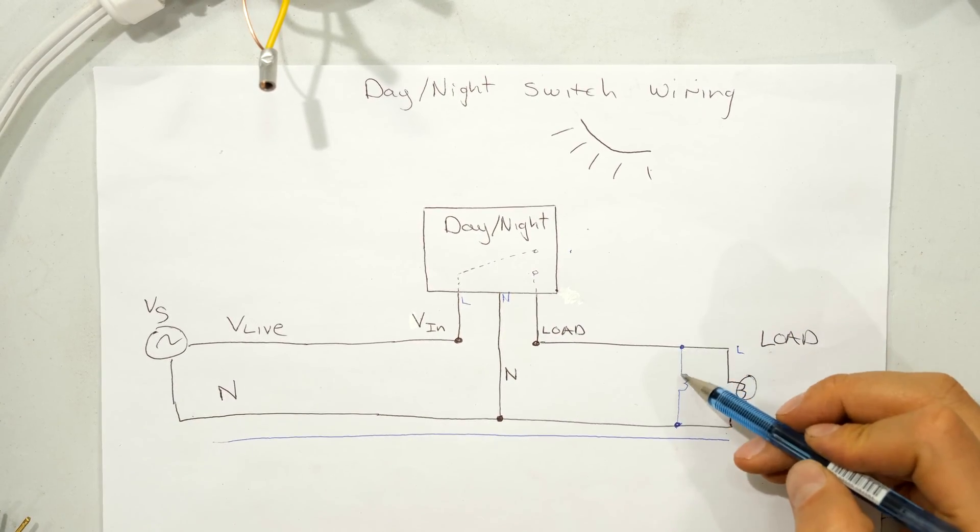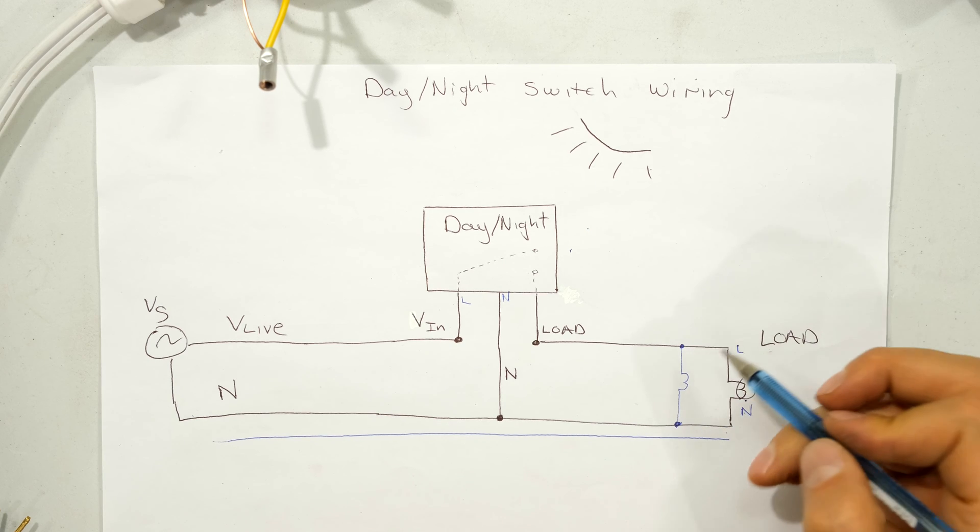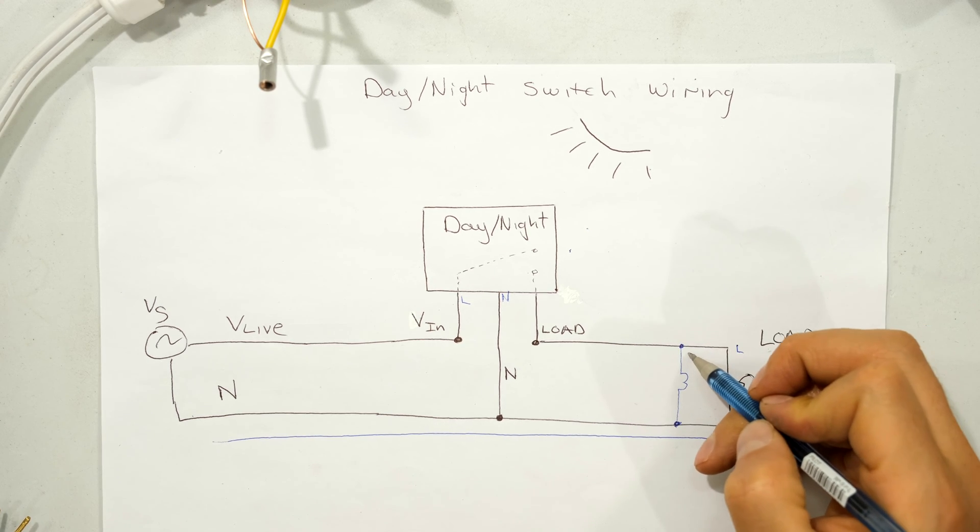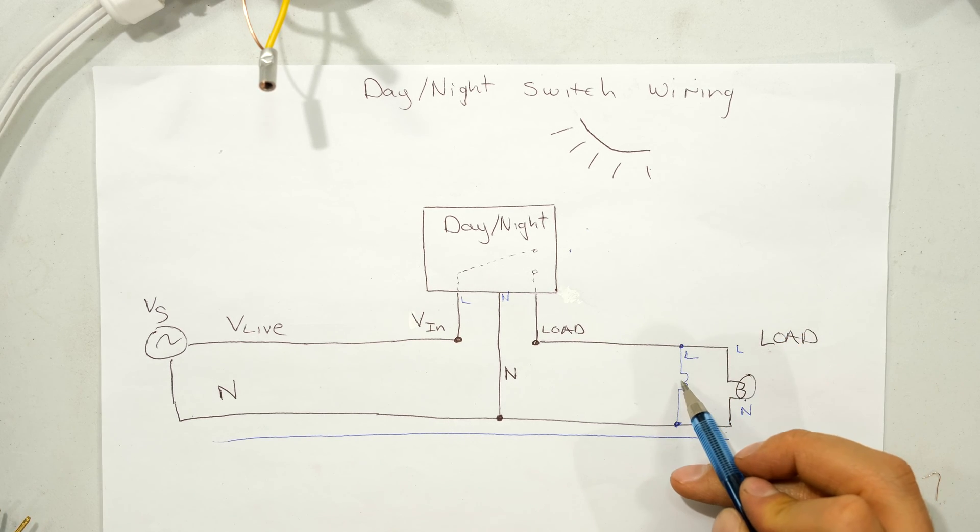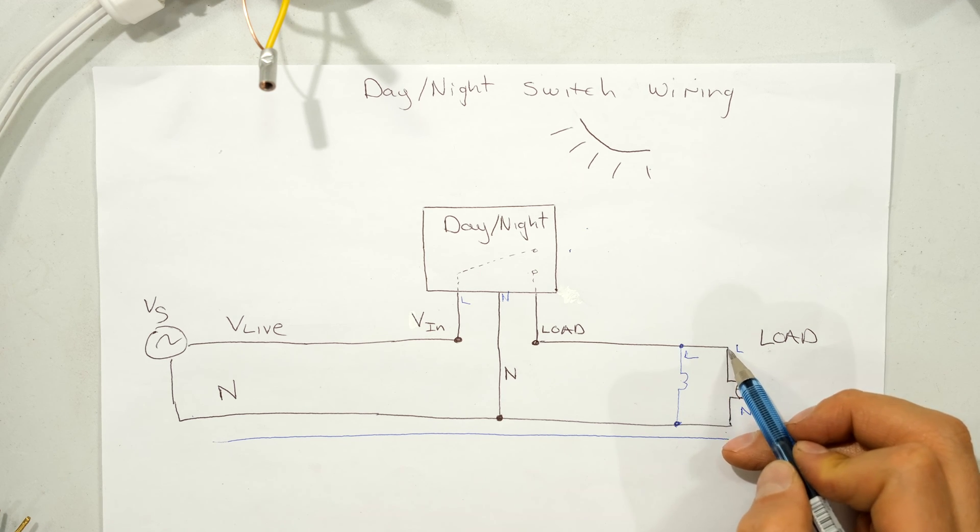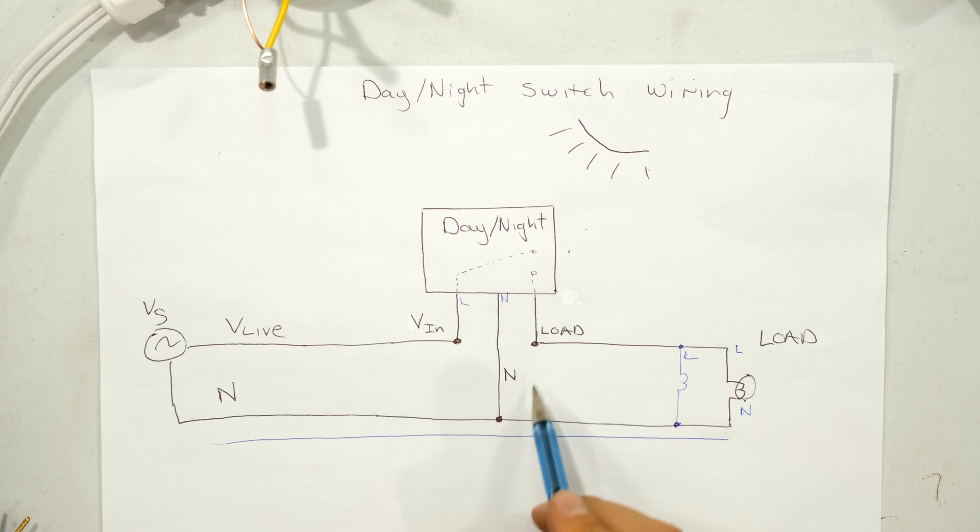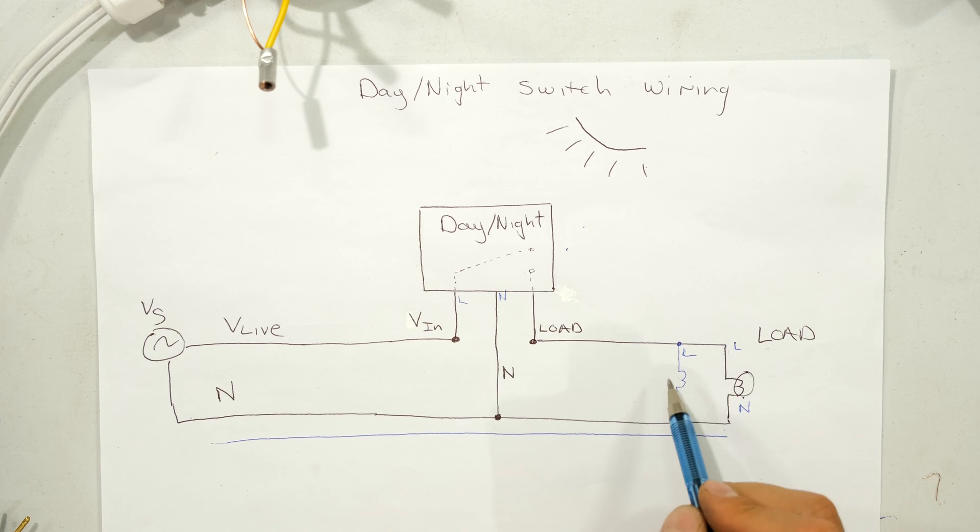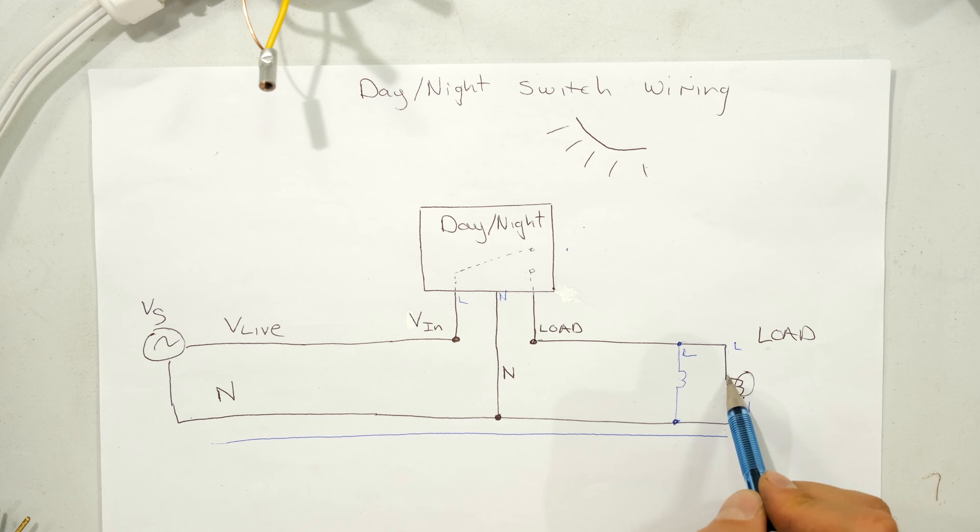So over here, I'm adding another light. Notice that the light is in parallel. So the live from the next light goes to the same live wire of the load wire coming from the day-night switch. So notice that the live for the first light and the live for the second light are actually touching each other. It's the same wire.